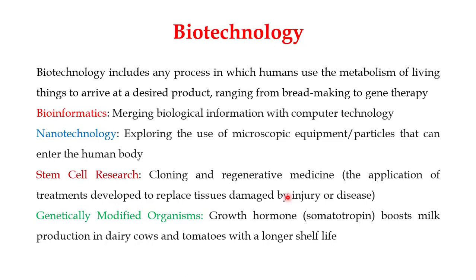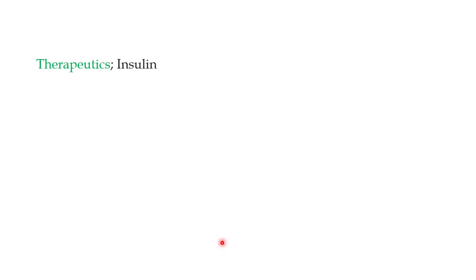Genetically modified organisms (GMOs) are yet another important example of biotechnology, in which you modify the genome of a particular organism. For example, somatotropin is a growth hormone that can boost milk production in dairy cows — modifying cows to produce this hormone can greatly increase milk output. Similarly, tomatoes can be genetically modified to have a longer shelf life.